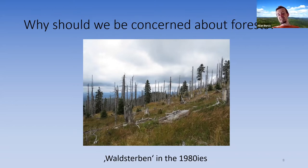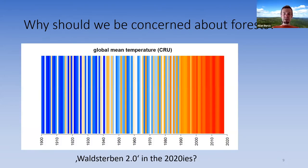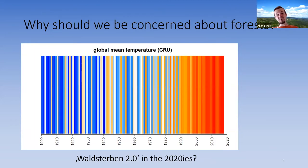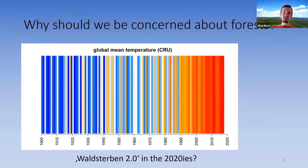What does the Waldsterben of the 1980s have to do with today? Forest ecologists are now talking about Waldsterben 2.0 in the 2020s. Again, the reason is a chemical compound — but this time not sulfur dioxide, but carbon dioxide, which is the main agent of climate change.